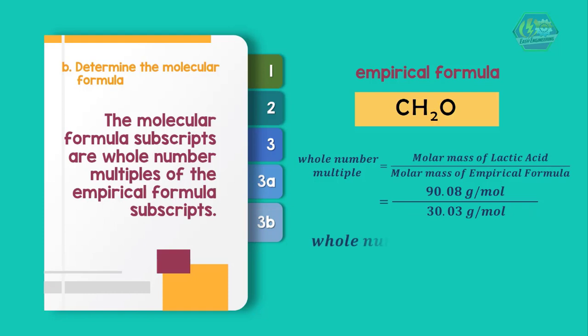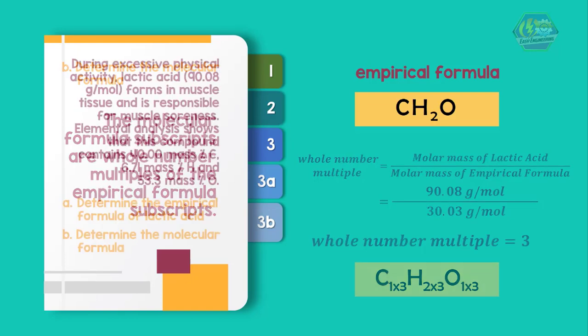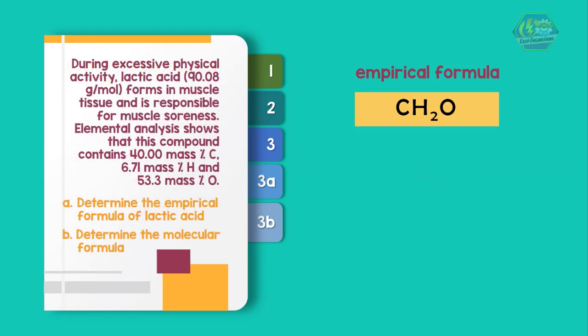Finding the whole number multiple, we have 3. Then we multiply each subscript in the empirical formula by the multiple. So we now have the molecular formula C3H6O3.